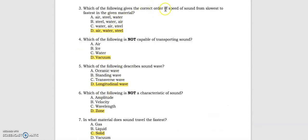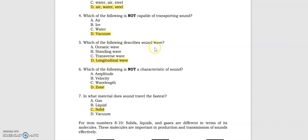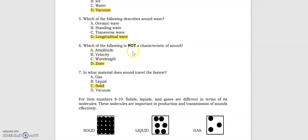Which of the following gives the correct order of speed of sound from slowest to fastest in the given material? Air, water, steel. Which of the following is not capable of transporting sound? Vacuum. Which of the following describes sound wave? Longitudinal wave. Which of the following is not a characteristic of sound? Zone. In what material does sound travel the fastest? Solid.